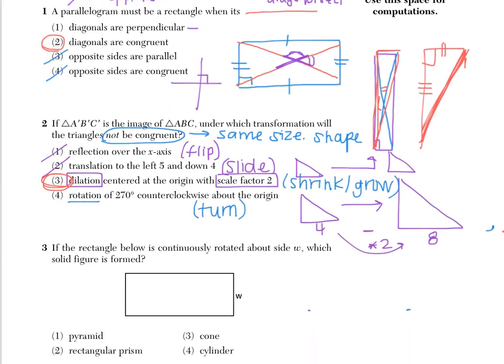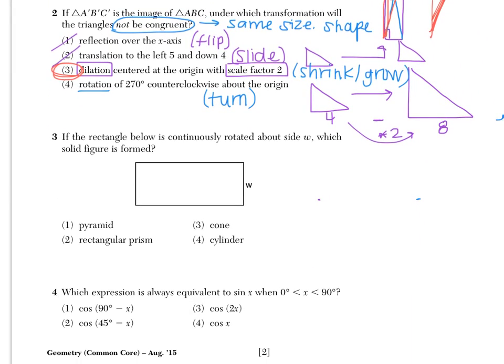Number three says, if the rectangle below is rotated continuously about side W, what solid figure is formed? So I'm just going to condense this little rectangle just so I can sketch this here. I'm going to rotate around this line here. And if I rotate, then any point on that single line on the red line is going to stay the same.